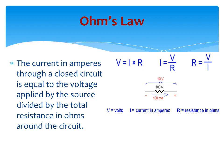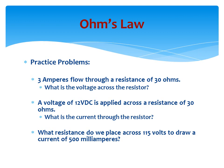Ohm's law is the fundamental law for this course, although there are several others that go along with it. The current in amperes through a closed circuit is equal to the voltage applied by the source divided by the total resistance in ohms around the circuit. Here are three practice problems — using that simple formula relating voltage, current, and resistance: if you know two, you can find the third.